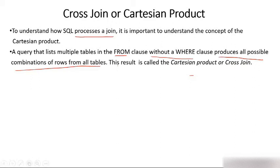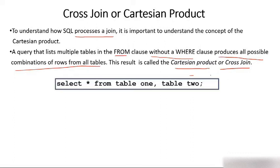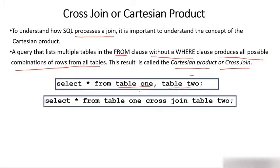Each row of the first table will combine with all the rows of the second table. This result is called Cartesian product or cross-join. The query is: SELECT star FROM table1, table2. So it's doing a Cartesian product between two tables — you need to put only a comma. Another way is to write SELECT star FROM table1 CROSS JOIN table2. Both are equivalent queries for Cartesian product or cross-join.